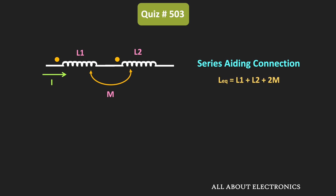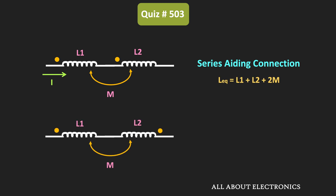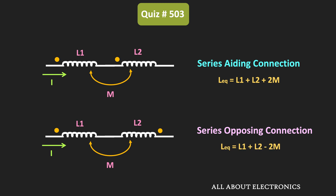On the other hand, in the same series connection, if the current is entering the dot in one coil and leaving the dot in another coil, then the flux produced by the two coils will be opposing in nature — this is the series opposing connection. In this configuration, the equivalent inductance is equal to L1 plus L2 minus 2M.